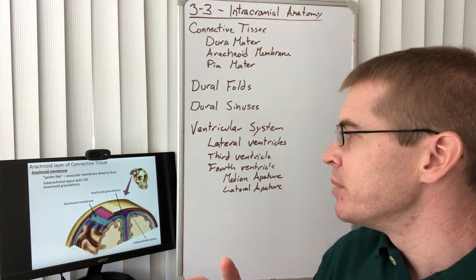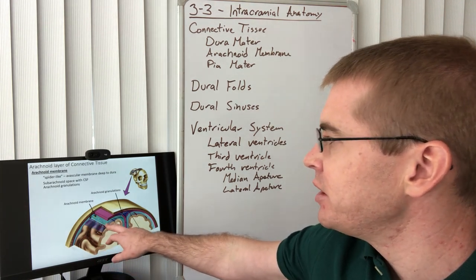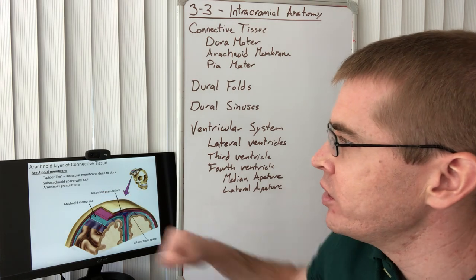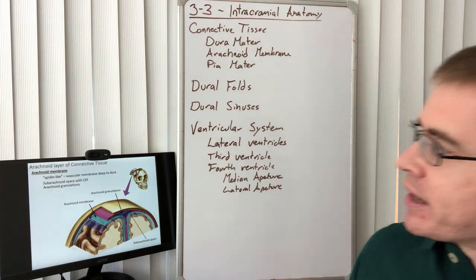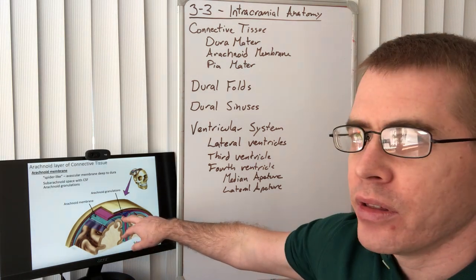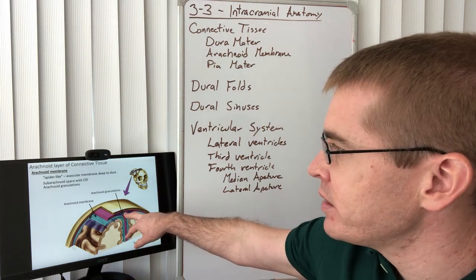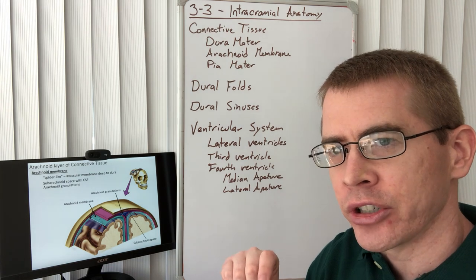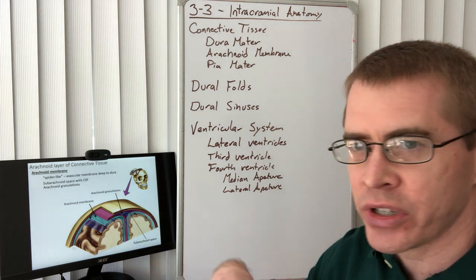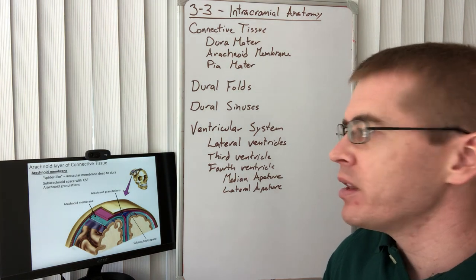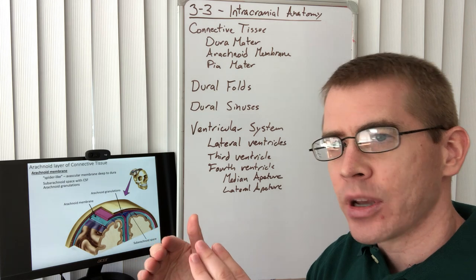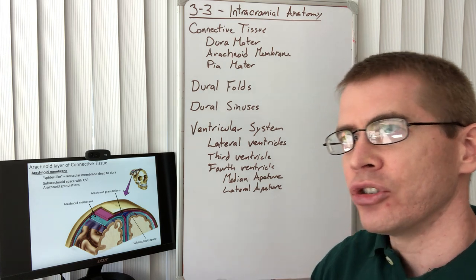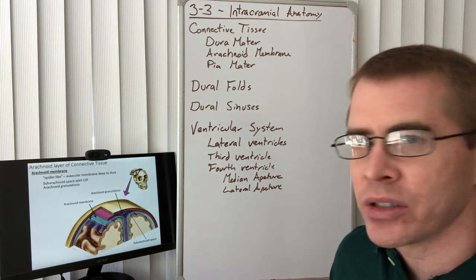The arachnoid membrane consists of a sheet-like structure with spider-like fibery extensions hanging down into the subarachnoid space. Between the subarachnoid space and the dural sinuses, there are openings called arachnoid granulations. These allow CSF to flow out of the subarachnoid space into the venous system, so that CSF can return to the venous system and be metabolized.